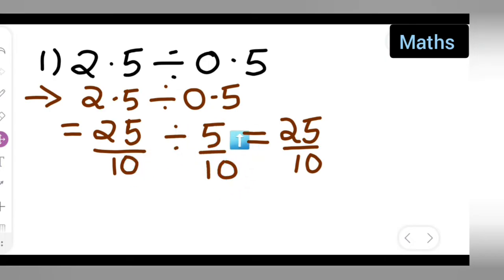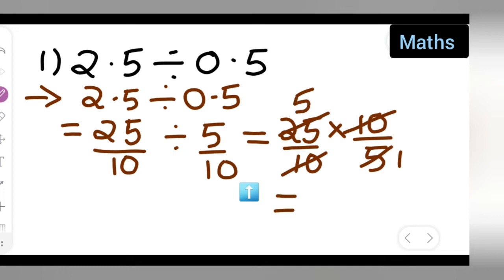So multiply it with reciprocal of this. Multiply it with reciprocal of 5 upon 10, which is nothing but 10 upon 5. So 10 and 10 will get cancelled. You will get 5 ones are 5, 5 fives are 25. So basically your answer is nothing but 5.